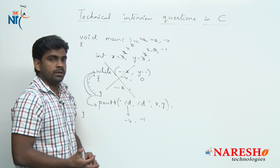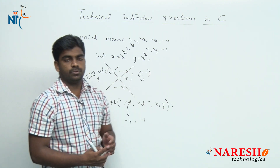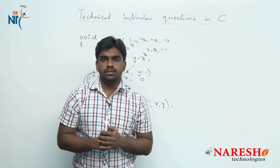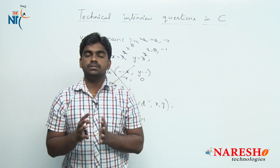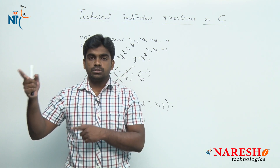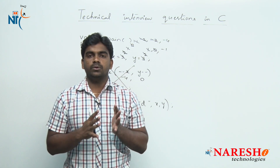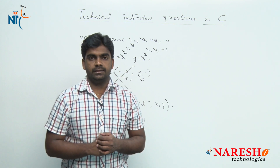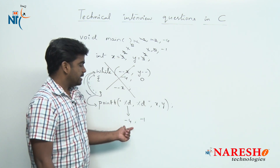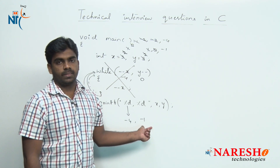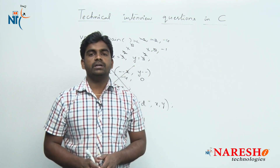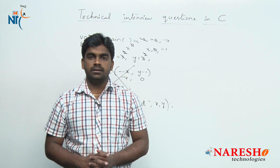This is how the execution works — this is how the while loop executes when multiple conditions are supplied: whenever the rightmost condition has failed, only then the loop is terminated. The output of this program is -4 and -1. Hope you understood. For more videos please subscribe to the Naresh IT channel. Thank you.